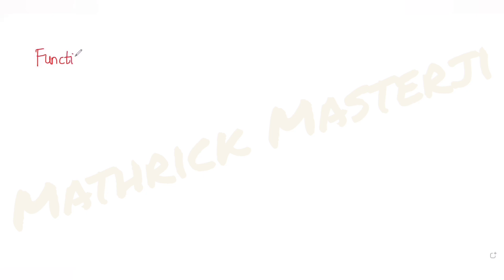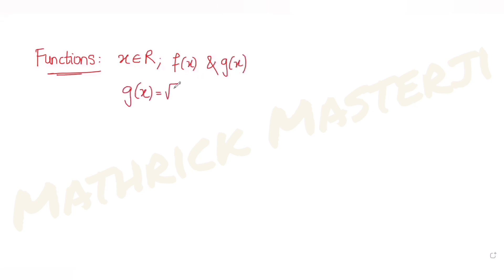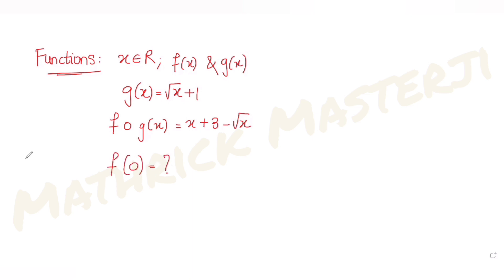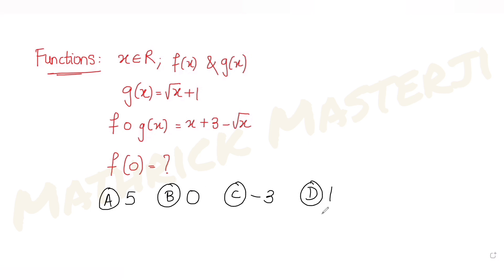Today's question is from the topic of functions. For x belonging to R, two real valued functions f(x) and g(x) are defined such that g(x) = √(x+1), and f(g(x)) = x + 3 - √x. The question asks: what is the value of f(0)? The answer choices given are five, zero, minus three, and one.